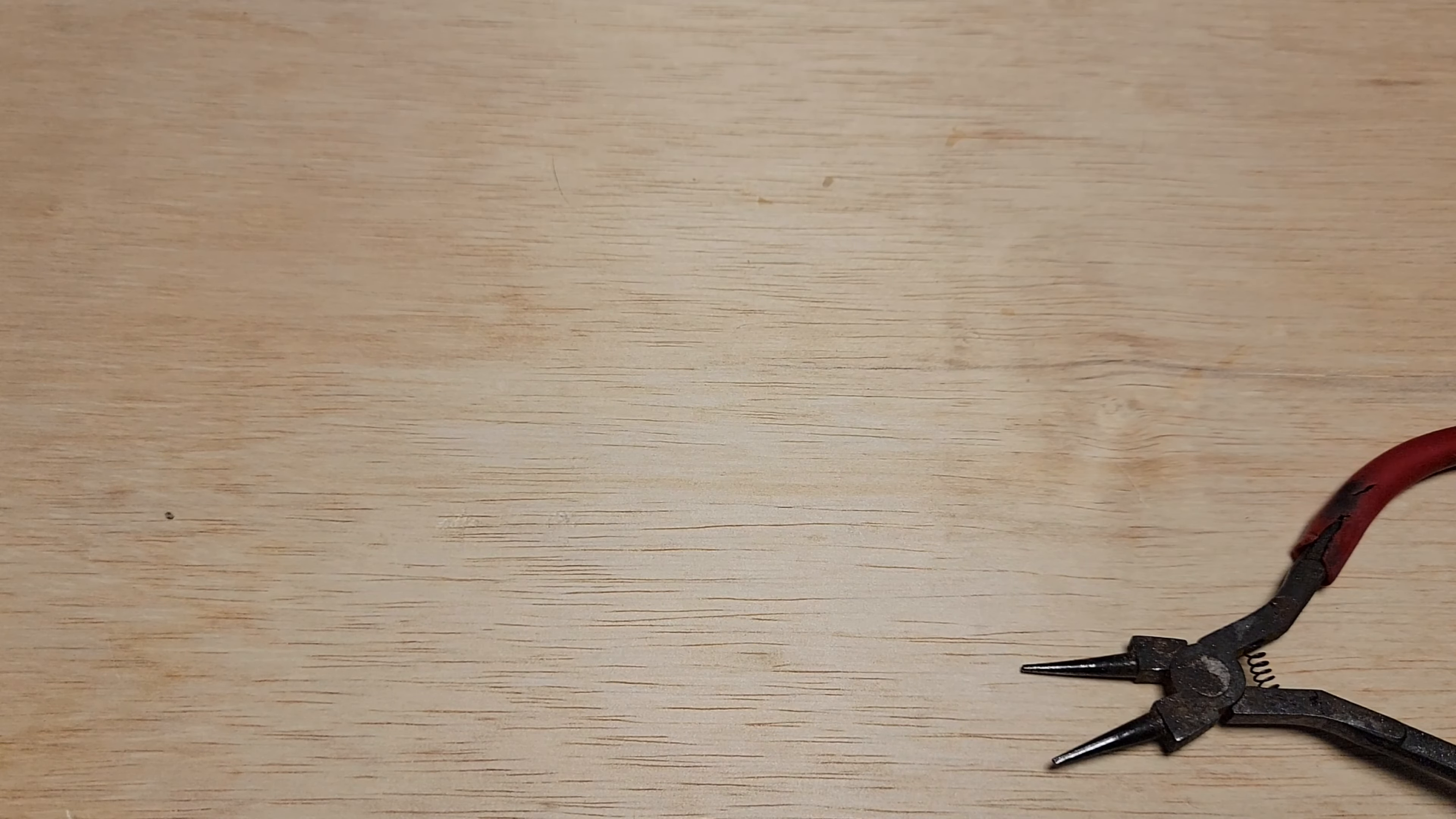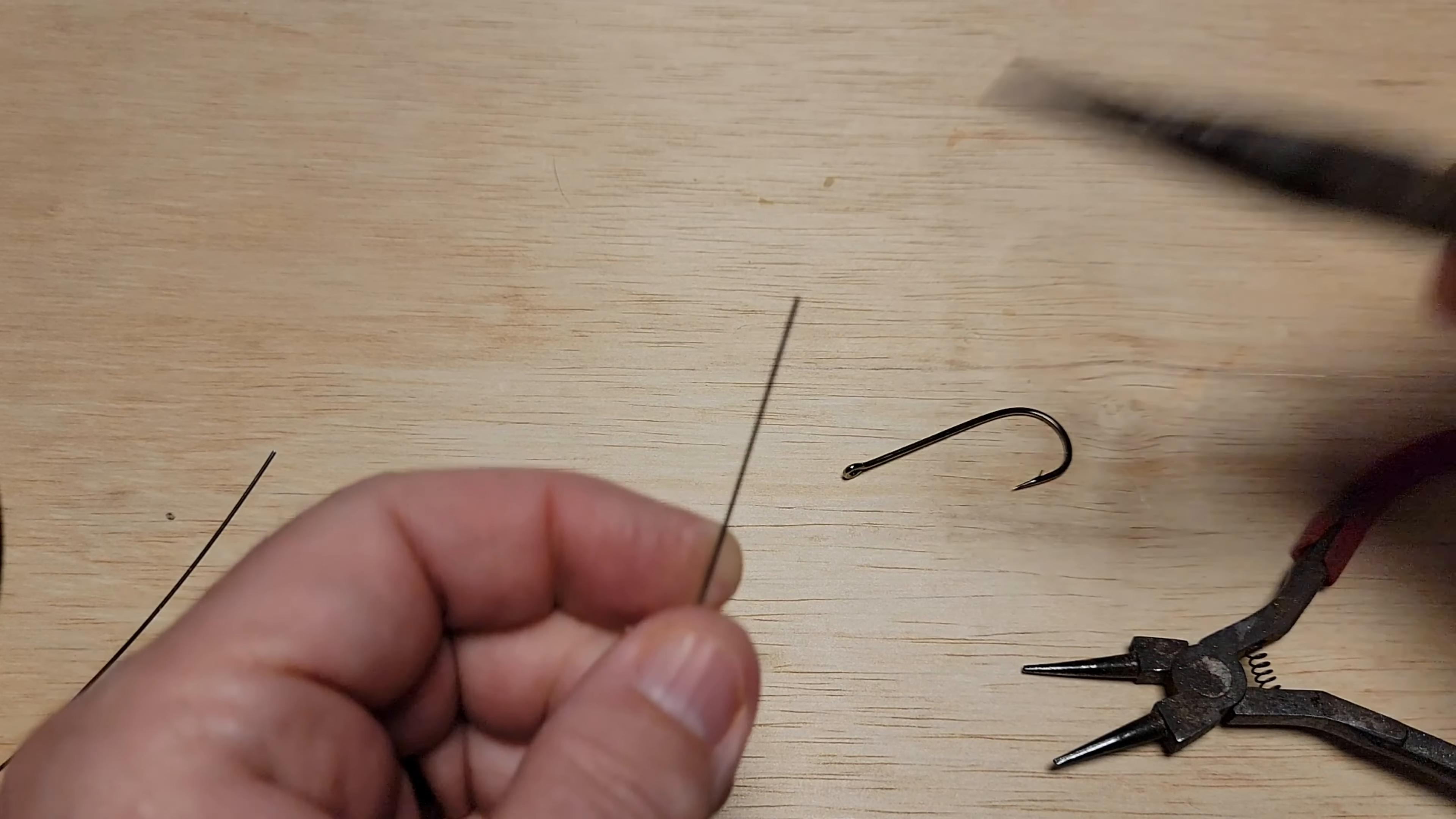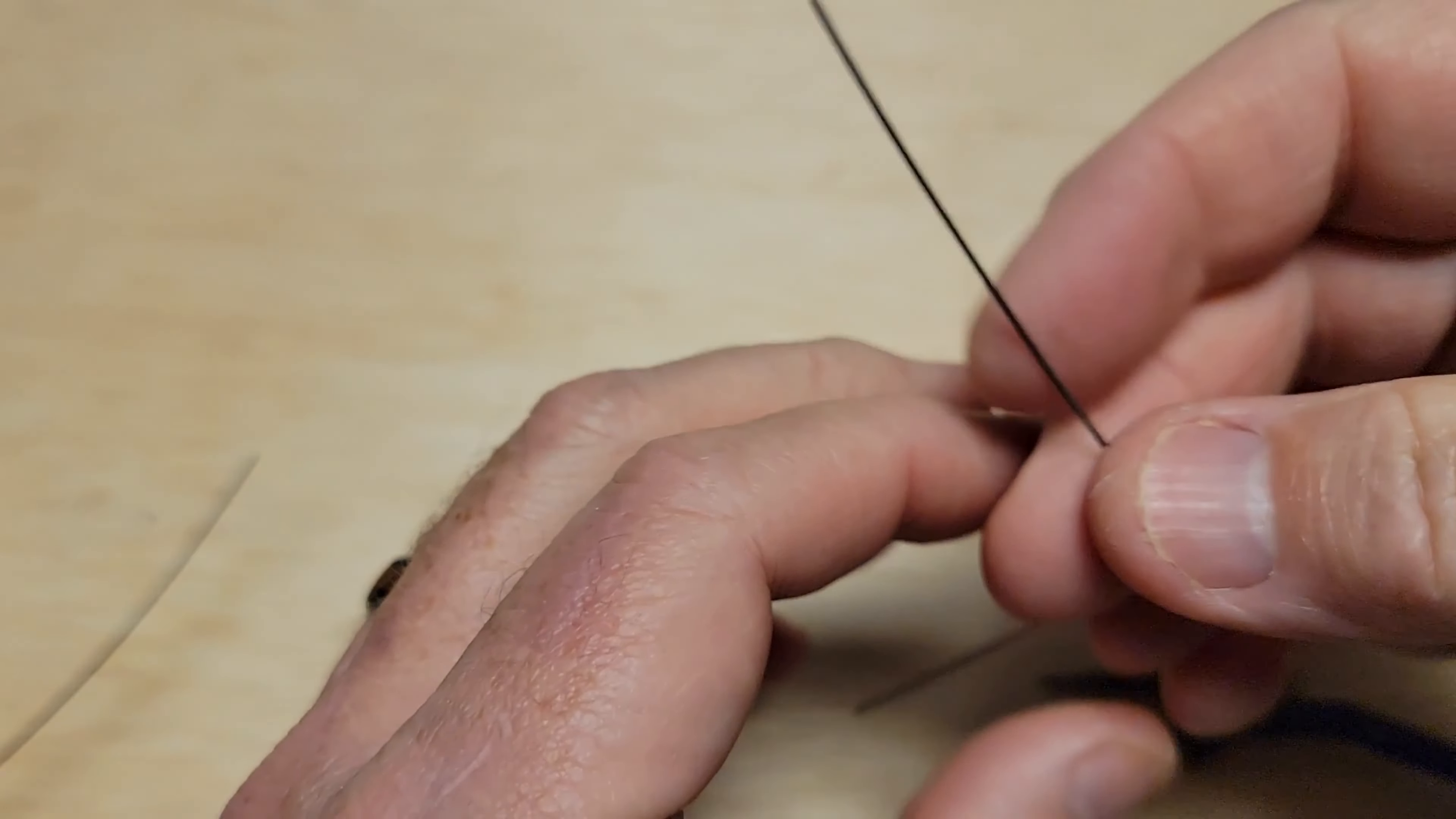Alright, third way I attach a hook. I do this for most of my jigs I make, spinner baits, buzz baits and everything, especially when I'm using a larger hook. This is like a five-aught spinner bait hook. What I'll do is just make a bend, 90 degree angle.